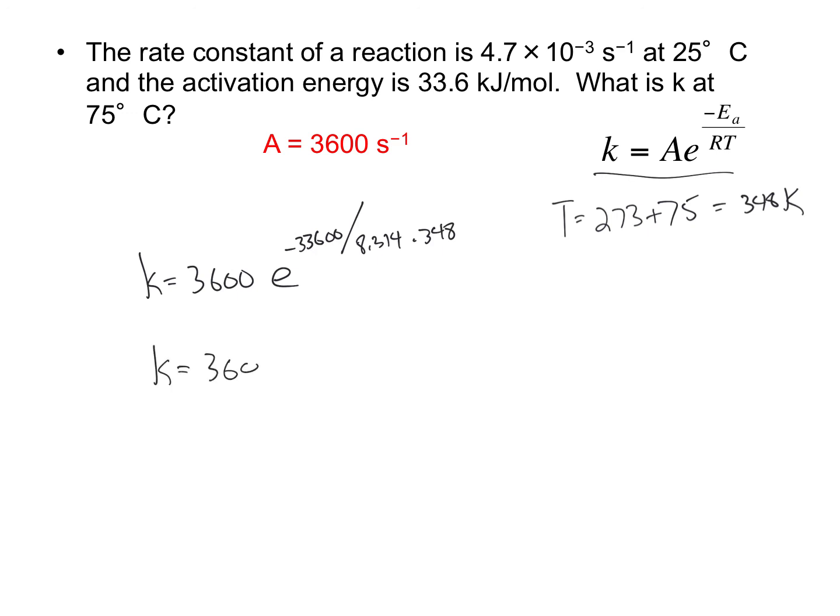So I'll break it up into two steps again. We've got 3600 times, I get 9.05 times 10 to the minus 6.